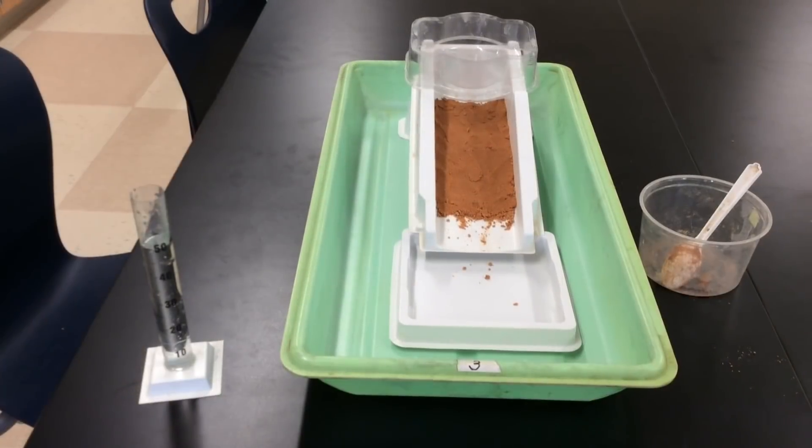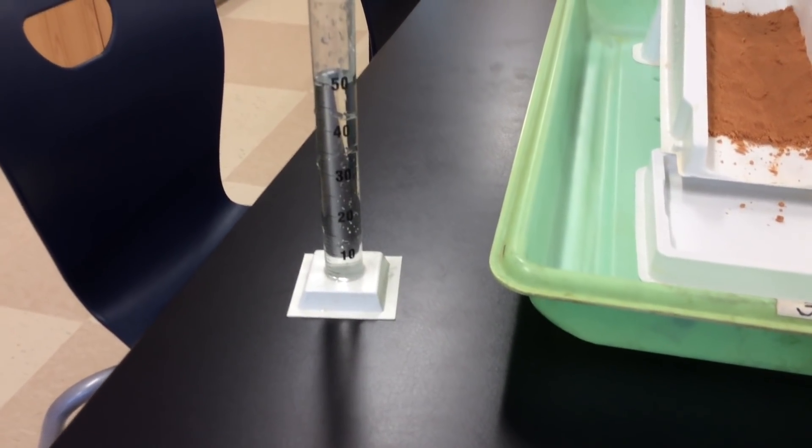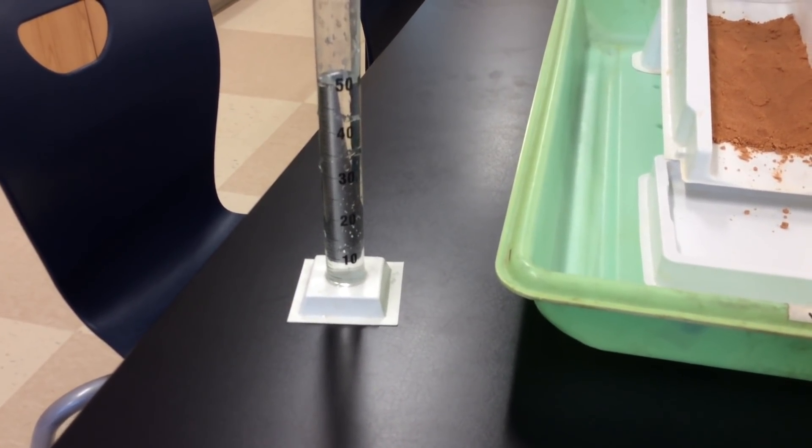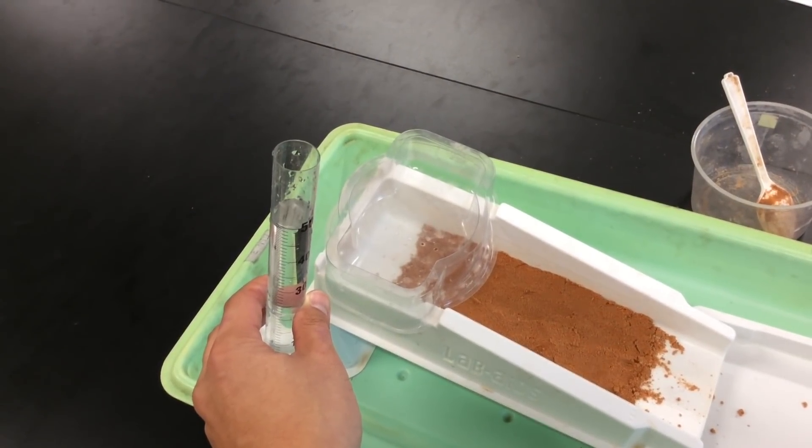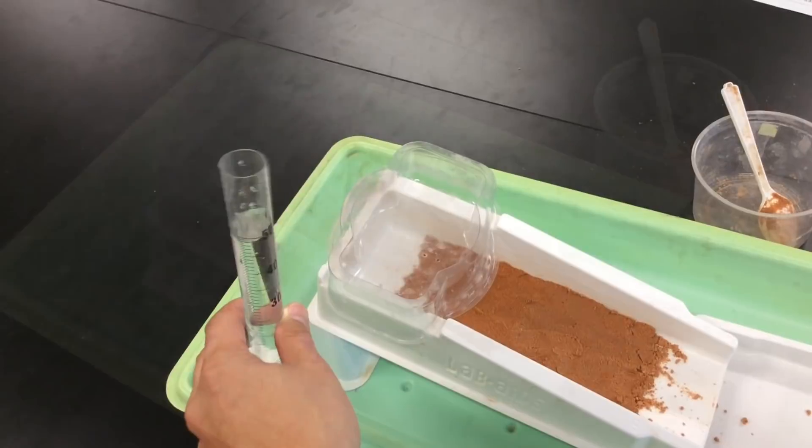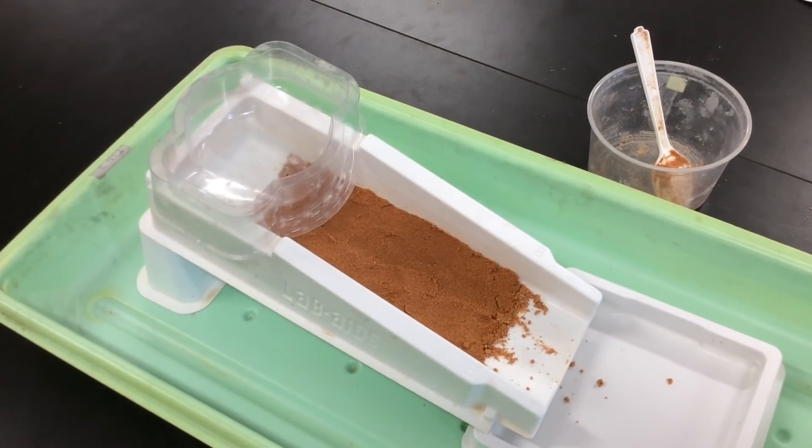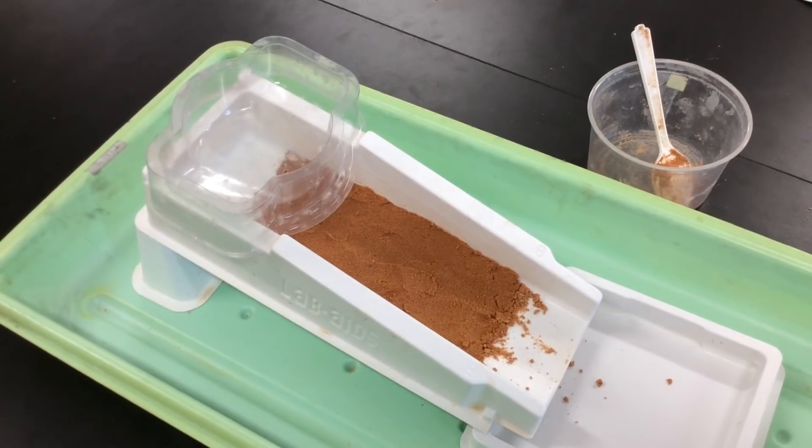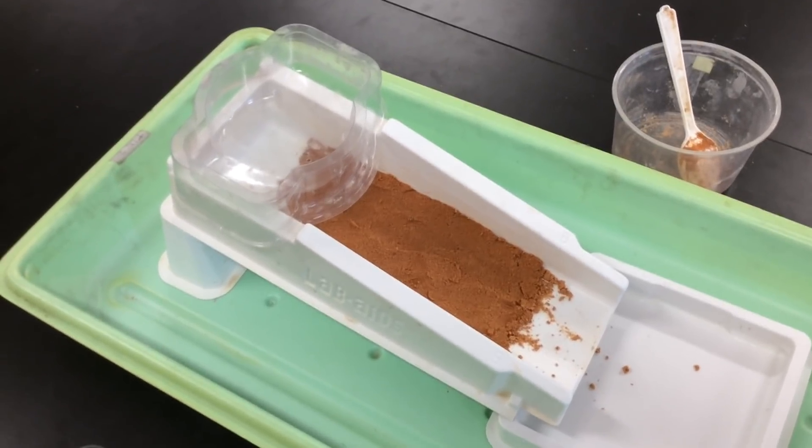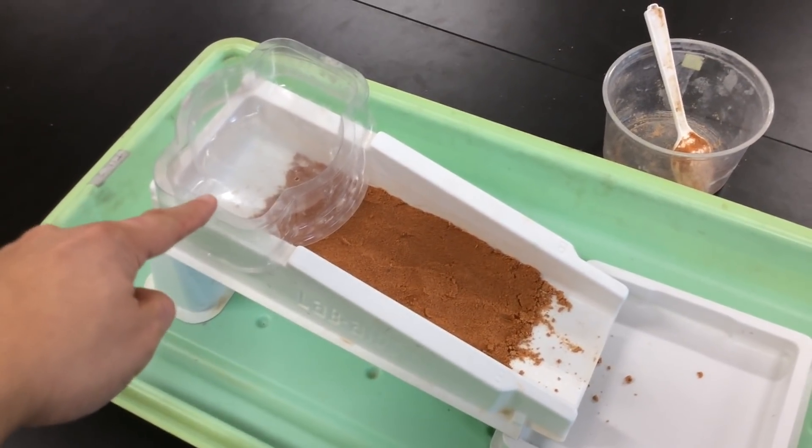Once you're ready to do the experiment, you're going to send somebody from your group to get 50 milliliters of water in your graduated cylinder. When you're ready, you can pour your 50 milliliters into your rainmaker. After you've poured your 50 milliliters, make sure that you're observing the river model the whole time until all of the water is fully drained from the rainmaker.